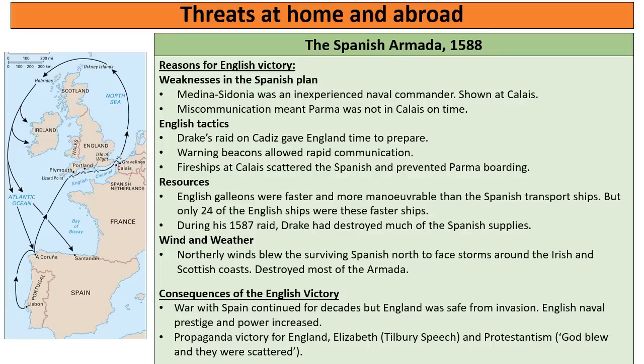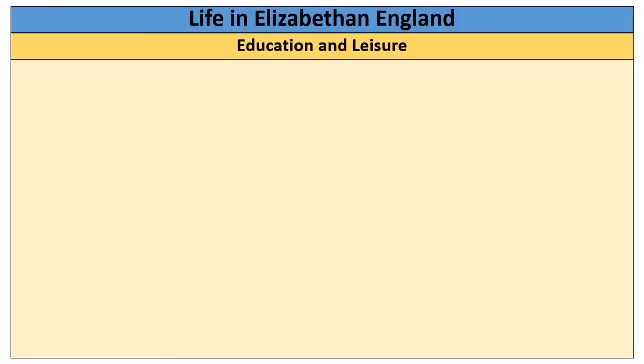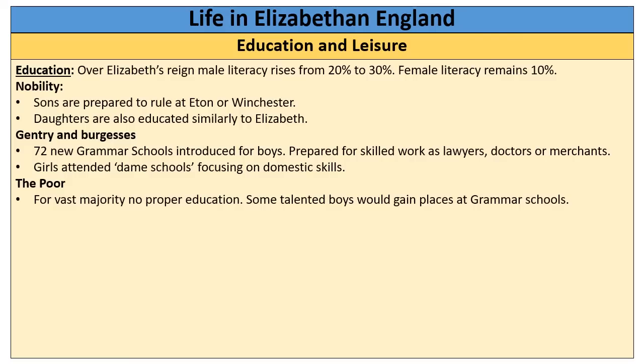The last part of our course is about life in Elizabethan England. We start with education and leisure. Over Elizabeth's reign, male literacy rises from 20% to 30% — a 10% jump. It's still a minority; 70% still cannot read or write. And there's no change at all in female literacy — only 10% of women can read or write at the start and end of Elizabeth's reign.